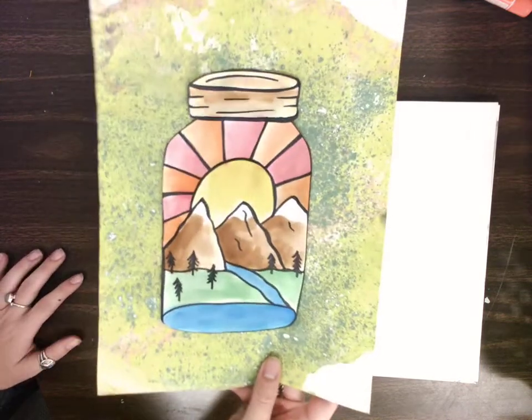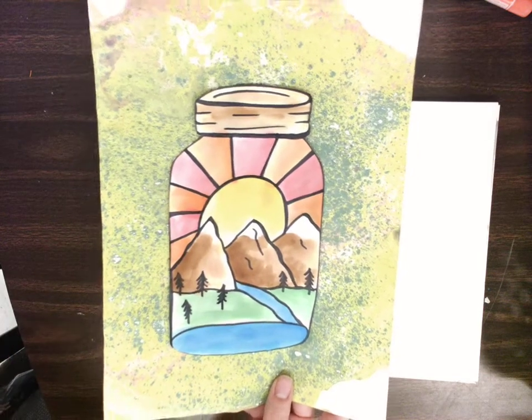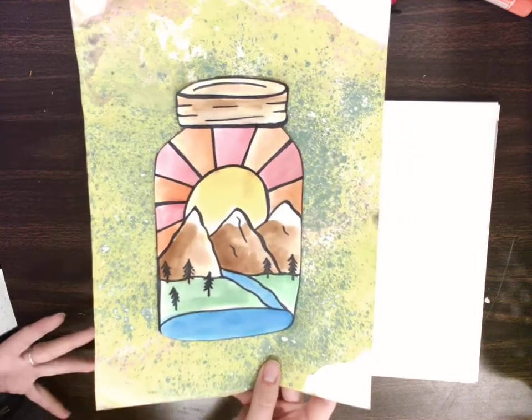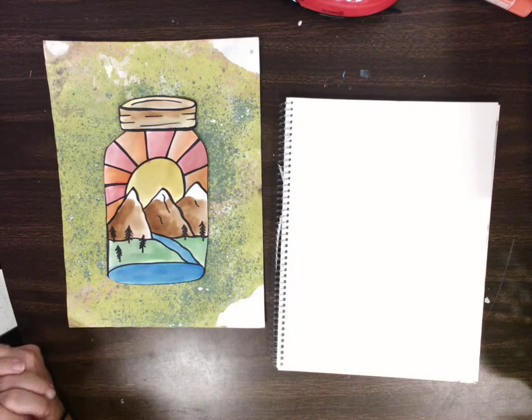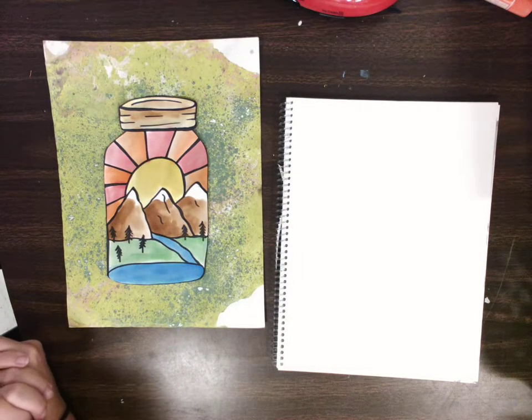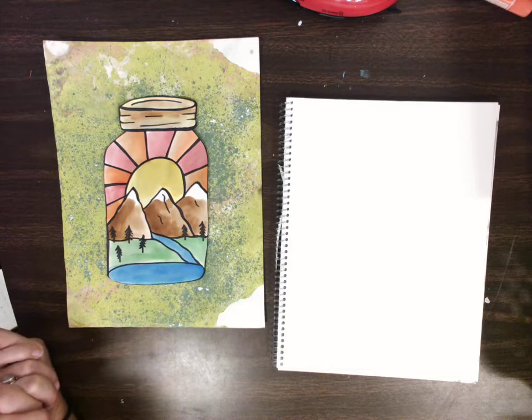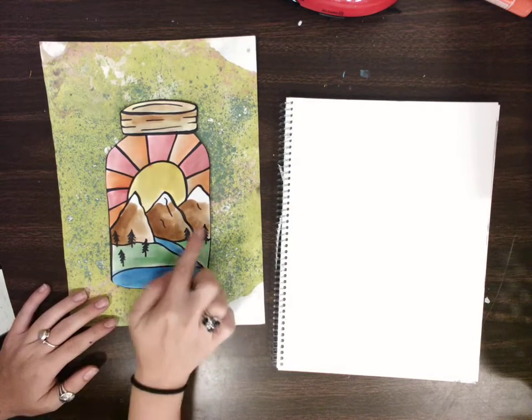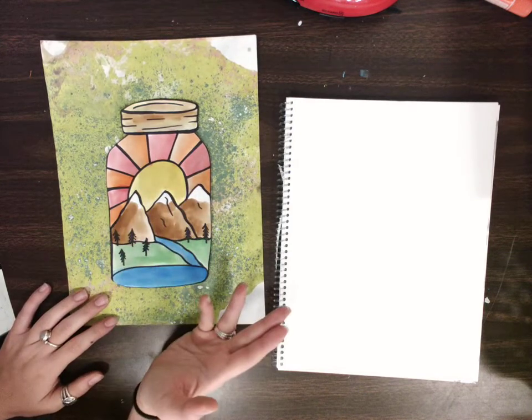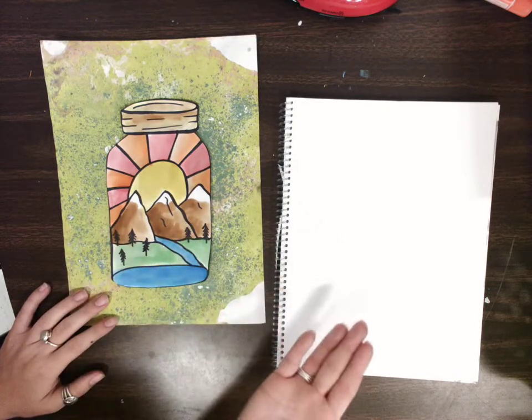So for me I think the world needs more adventure and whether that be my world or others worlds I think adventure is good for the soul. I think that seeing new things puts different perspectives in our mind and gets us a little bit excited about the unknown. So that's what I put inside my jar. I put some mountains and a sun to represent the travel that I would like to do or I think that would benefit other people.